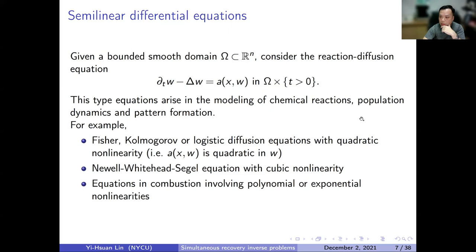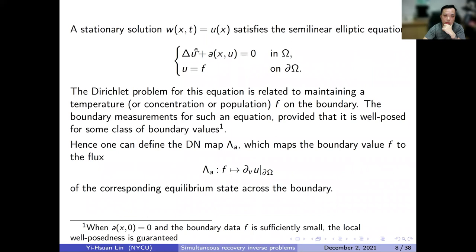Based on this motivation, if we consider the stationary solution W(x,t) independent of the time variable — so W equals U(x) — and consider the semilinear elliptic equation: Laplace U plus A(x, U) equals zero, this is an elliptic equation related to maintaining temperature inside a region. For given boundary data, boundary measurements can be defined if one shows well-posedness. This well-posedness is not global; we always need to assume the boundary input data to be small.